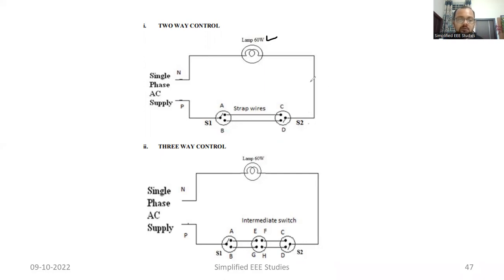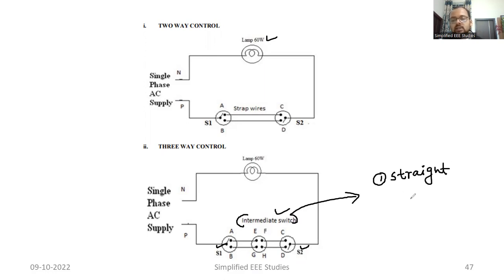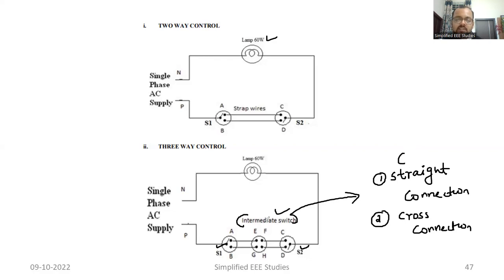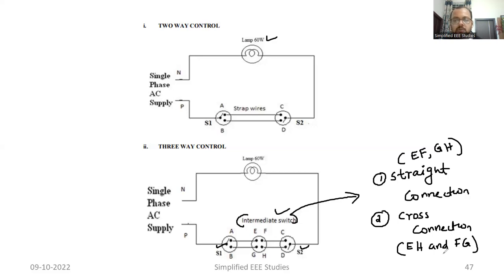You can see we have three switches. S1 and S2 are normal type of switches. Apart from that, we have one intermediate switch. The intermediate switch has two positions or two conditions. One is called straight connection and the other is called cross connection. In case of straight connection, EF and GH are in contact. In case of cross connection, EH and FG are in contact. This point you have to remember — straight connection and cross connection.